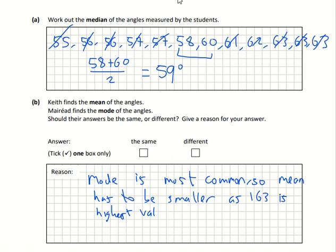Something along those lines, or what you could do is just work out what the mode is and work out what the mean is. You know the mode is 63, so write that down, then work out what the mean is. That proves they're different.